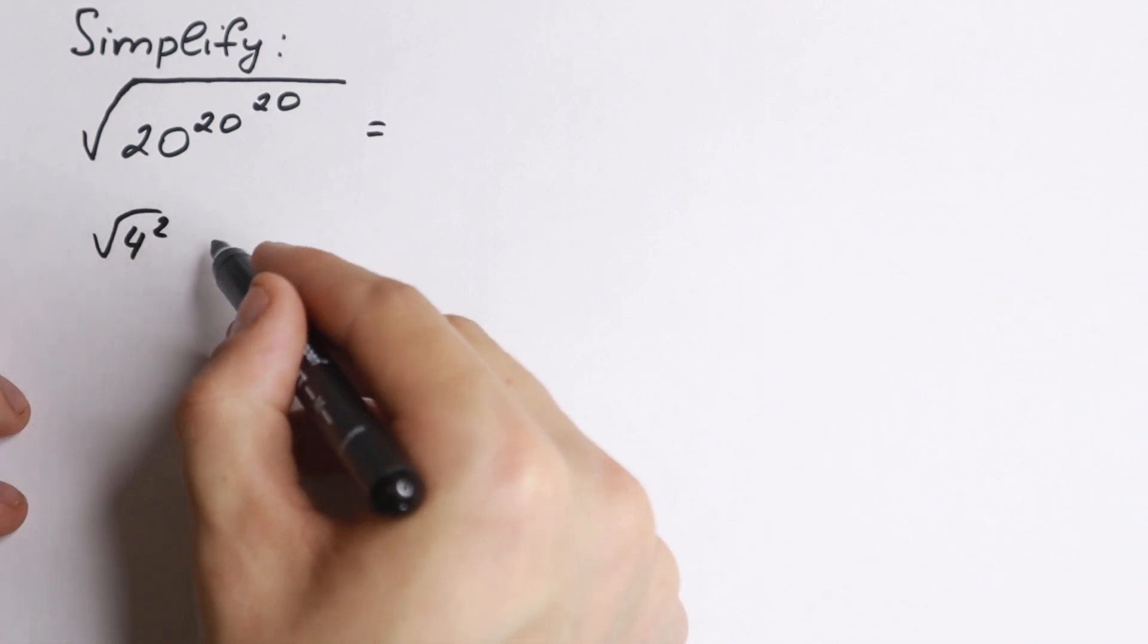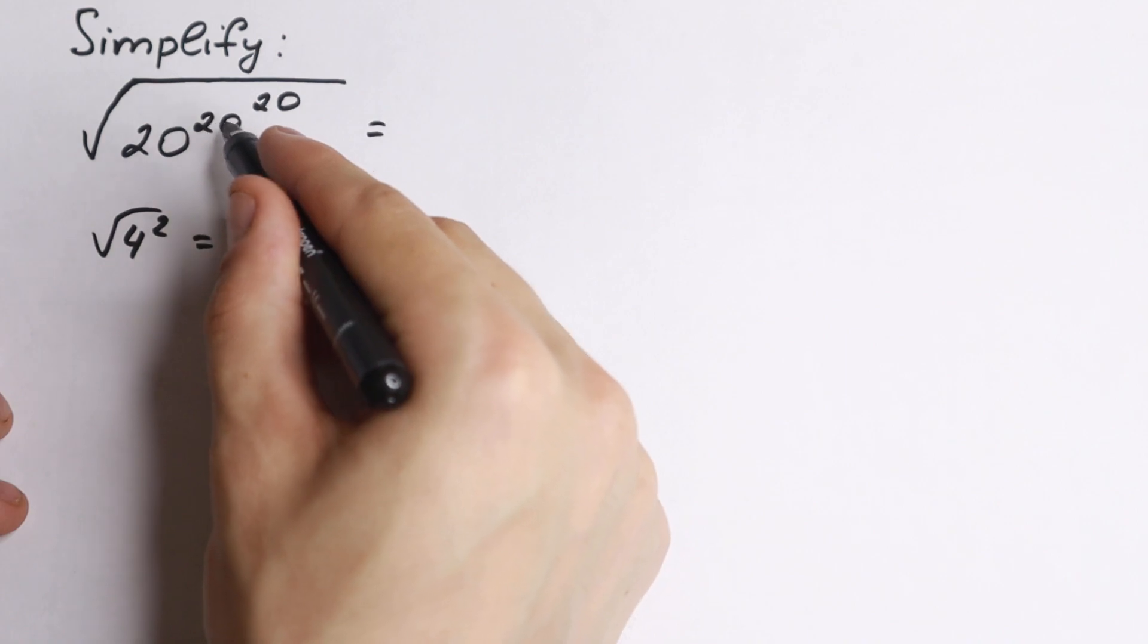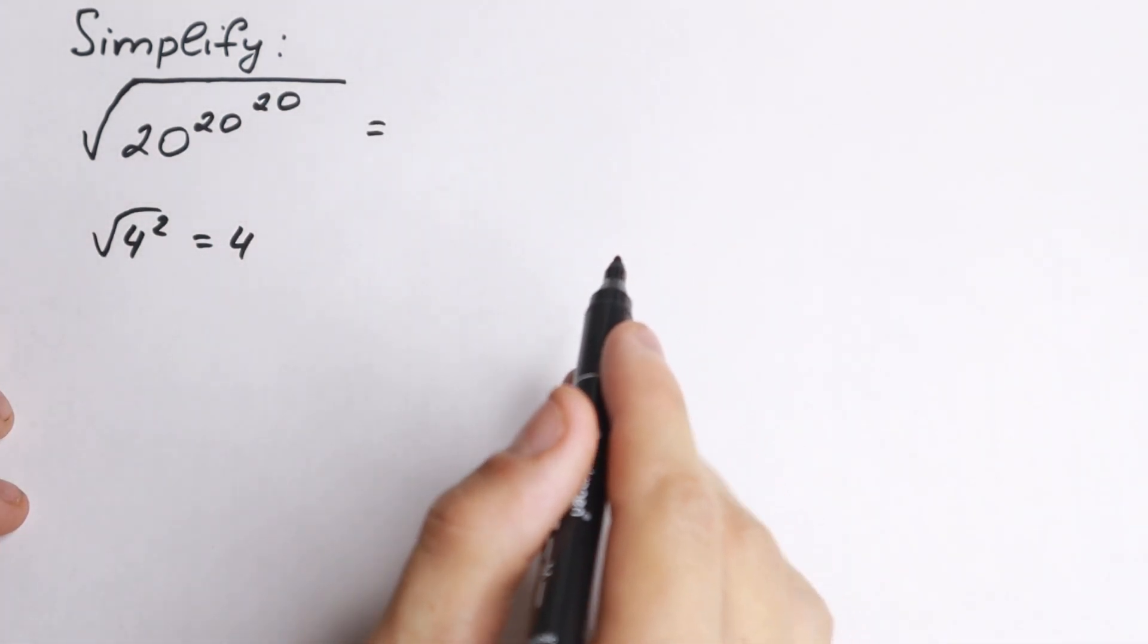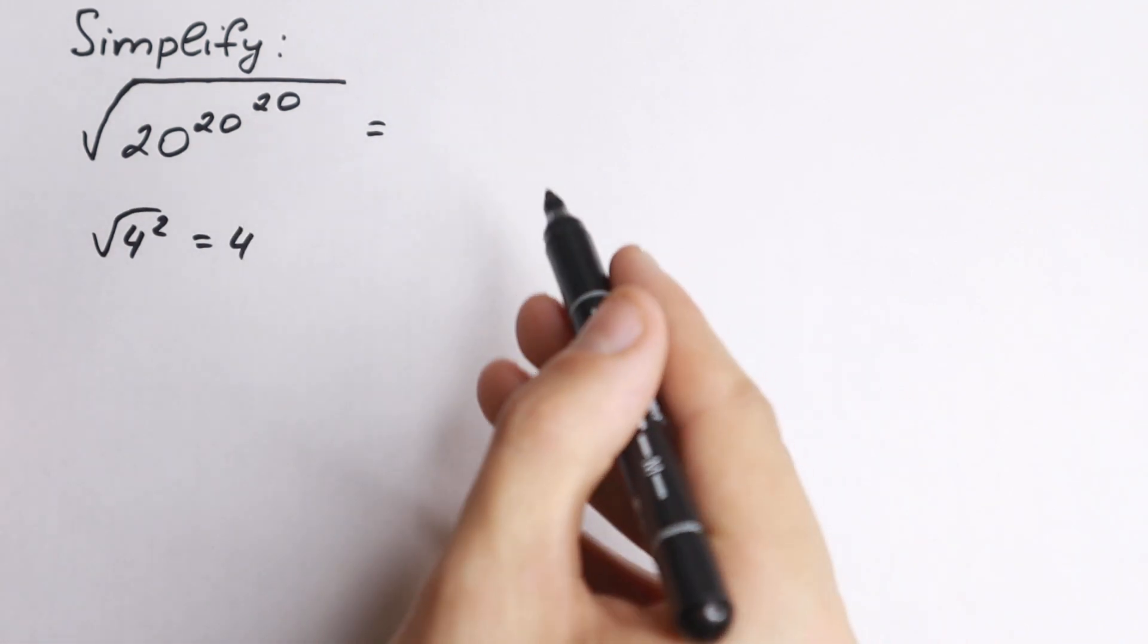We have square root of, for example, 4 squared, which is equal to 4. So it's not like this question. We have this 20 two times, so 20 to the power 20. So how can we solve it? I want to show you the great trick, how can you understand this explanation.